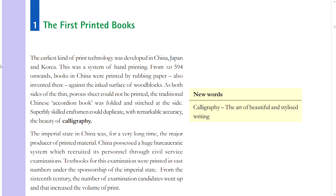Section 1: The First Printed Books. The earliest kind of print technology was developed in China, Japan, and Korea. This was a system of hand printing from AD 594 onwards. Books in China were printed by rubbing paper — also invented there — against the inked surface of wood blocks. The traditional Chinese accordion book was folded and stitched at the side. Superbly skilled craftsmen could duplicate with remarkable accuracy the beauty of calligraphy — the art of beautiful and stylistic writing.